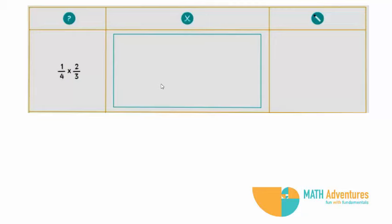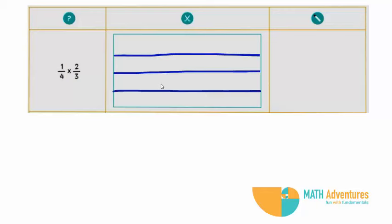Next, divide your rectangle into 4 parts by drawing horizontal lines. Now, shade 1 fourth, that is 1 out of the 4 parts using any one color.